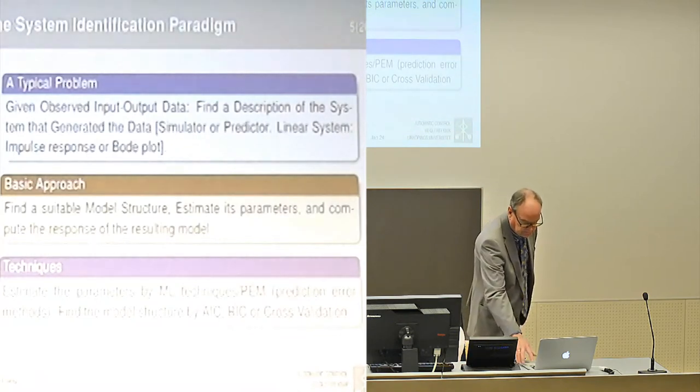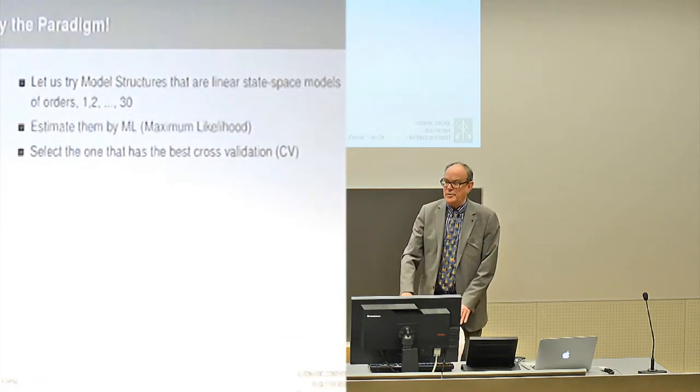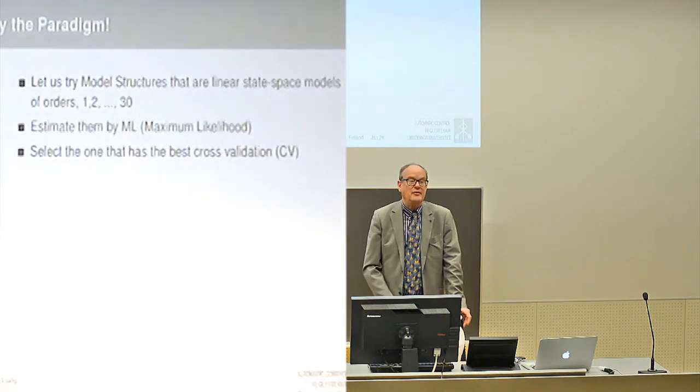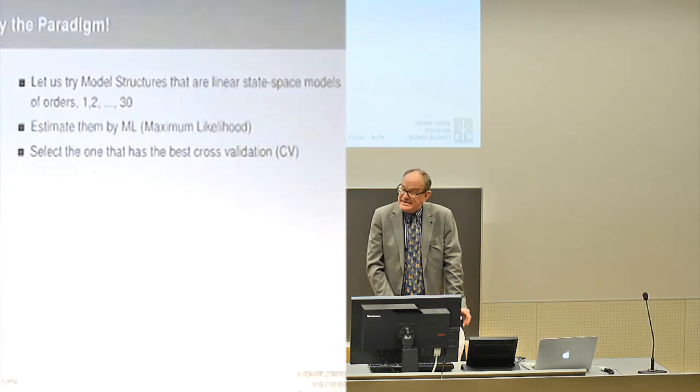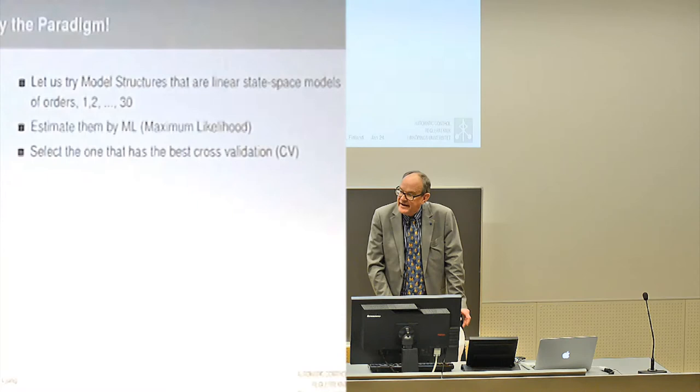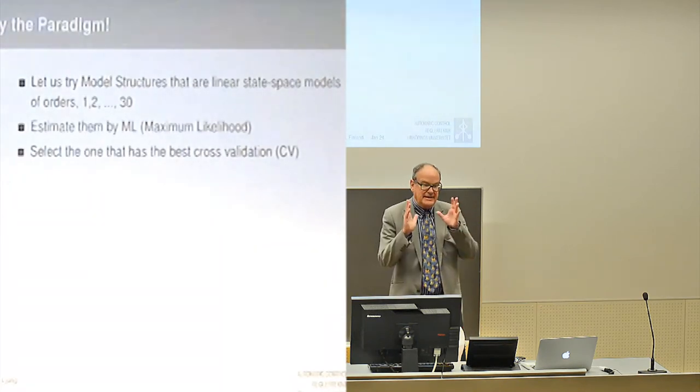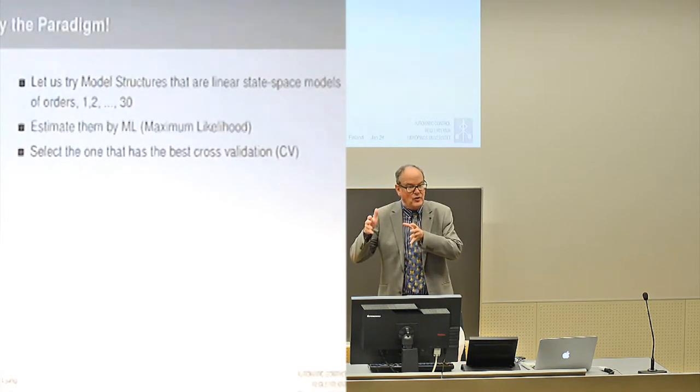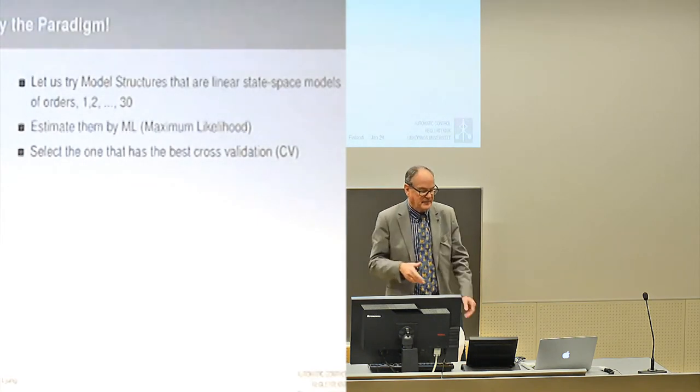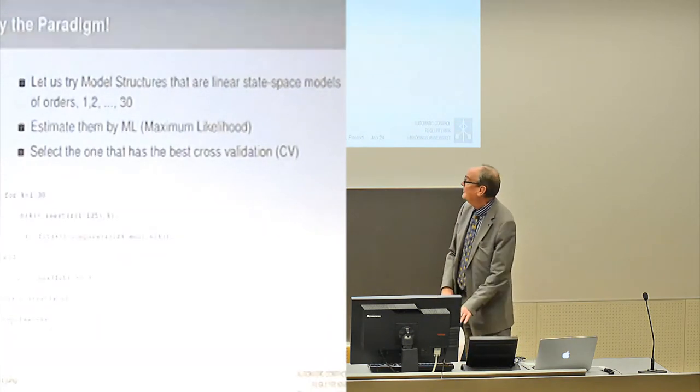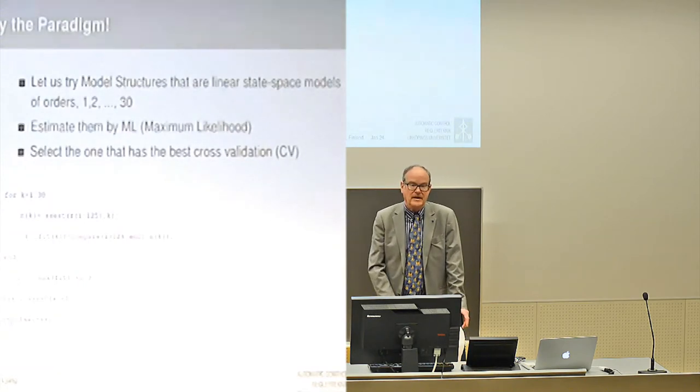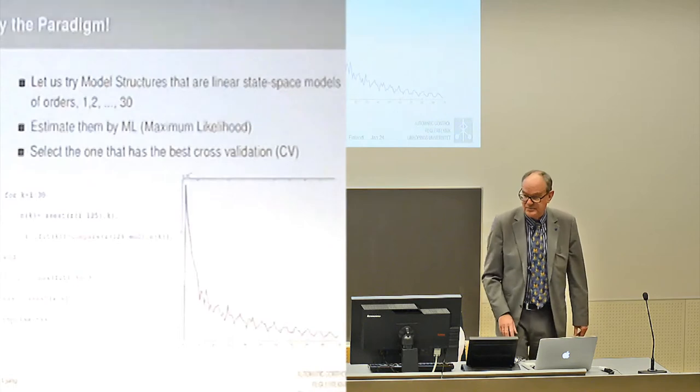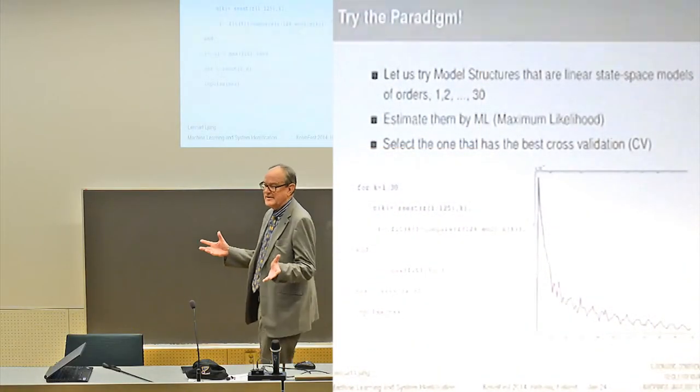Let's test this on our data. So I don't know what order to use to describe the data I just showed you. So I tried simple state-space models of orders increasing from 1 to 30. I tried all of them. I estimate the parameters by maximum likelihood. How do I find out which model I should use? I don't know. So I split the data into two halves, estimation data and validation data. Fit the models on the first half, and then I evaluate how well these models reproduce the validation data. Then you pick the model that has the best fit to the validation data. That happens at an 8th order state-space model. And you plot the impulse response of that model, and here it is. So that's the answer. The system identification paradigm gives you this answer.